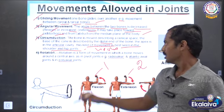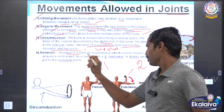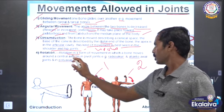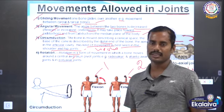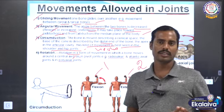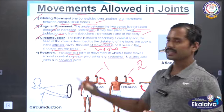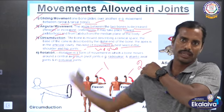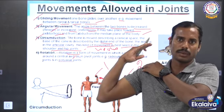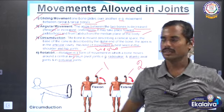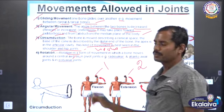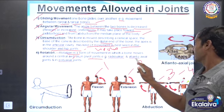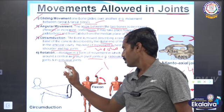The last movement is rotation. Rotation is the movement of a bone moving around its central axis. The central axis is the point around which the bone rotates. In pivot joints, for example, the radio-ulnar and atlanto-axial joint.